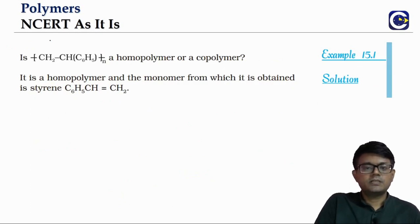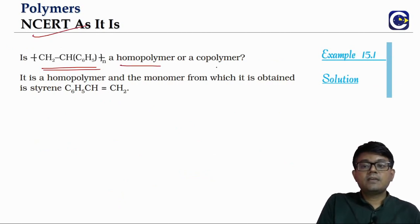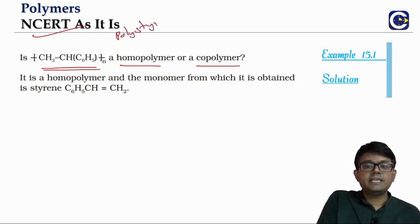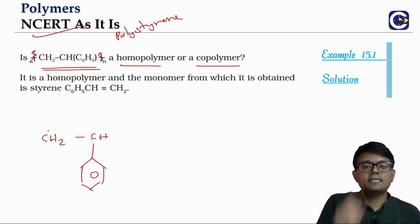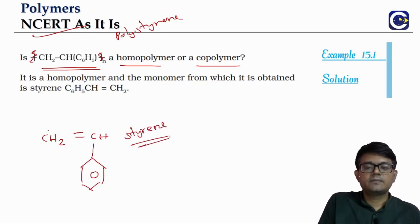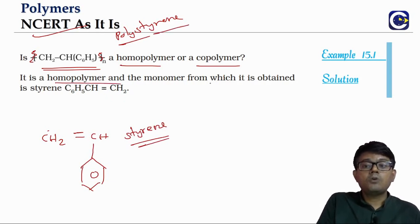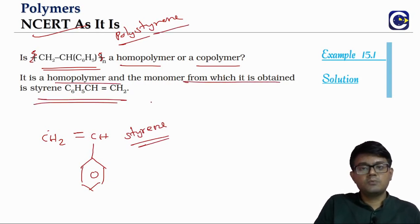Example question: Given a polymer structure (polystyrene within brackets), determine if it is a homopolymer or copolymer and identify the monomer. Removing the bracket gives CH₂–CH–C₆H₅ with two valency-deficient carbons that form an extra bond — giving styrene. Since there is only one monomer, polystyrene is a homopolymer and styrene is its monomer.